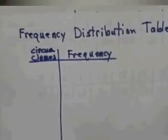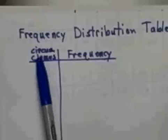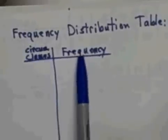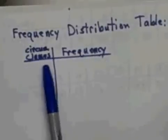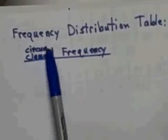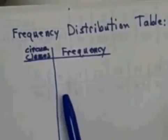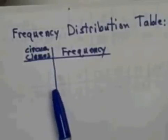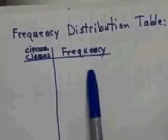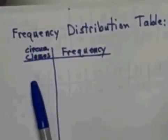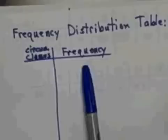My pen kind of ran together a little bit. You probably can't read this. This first column of this frequency distribution table says it's going to be the circumference classes. Hopefully, you've read enough in the text. You understand that a frequency distribution table is made up of two columns. One column is the classes, and the other column is the frequency.